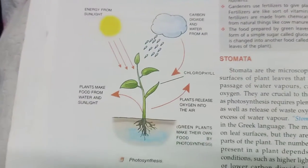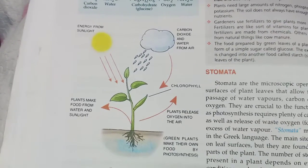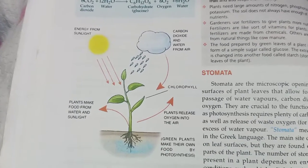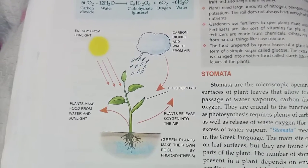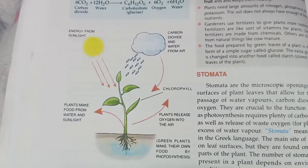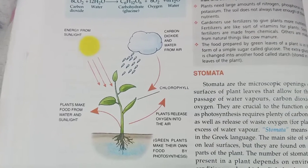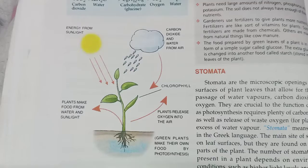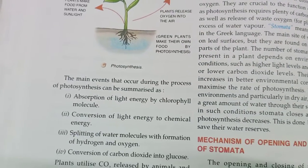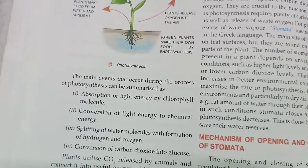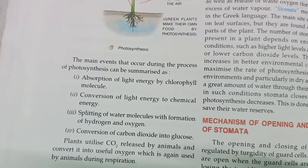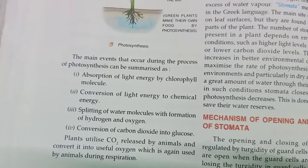You can see here the process of photosynthesis — green plants get water from the soil with the help of roots, they take carbon dioxide from the air, and with the presence of sunlight and chlorophyll present inside the leaf, they are able to prepare food. The main events that occur during the process of photosynthesis can be summarized as follows. Number one: absorption of light energy by chlorophyll molecules.